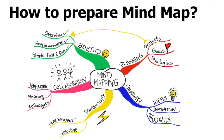Over here you can see we have 'mind map' as the root idea, which then connects to benefits, productivity, creativity, and planning. All those branches are further divided into sub-branches or sub-ideas — for example, planning is divided into project goals and strategies; creativity is divided into ideas, innovation, and thoughts, and so on.